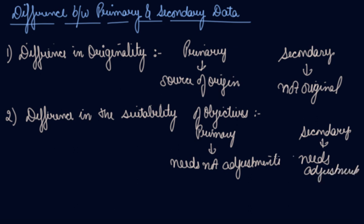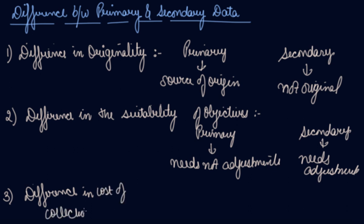The third difference is the difference in cost — cost of collection. Primary data costs more than secondary data because you require time, money, and different field workers to go and collect the data on your behalf. Whereas for secondary data you just have to pay a fee to the agency and you can get the data simply. So secondary data is less expensive than primary data.